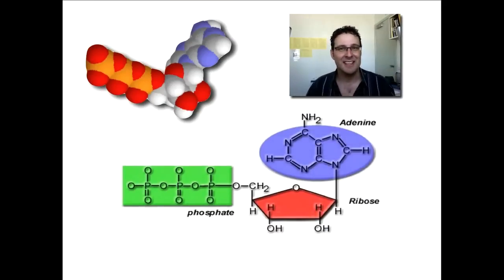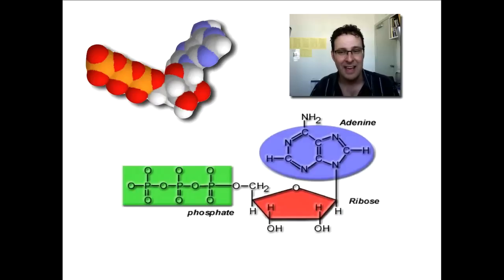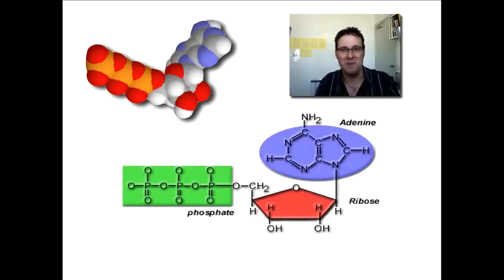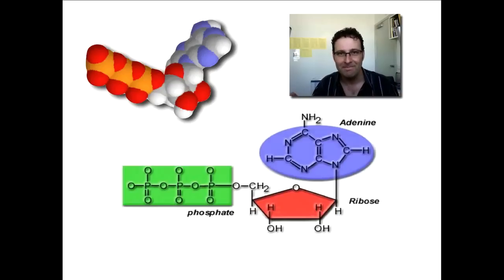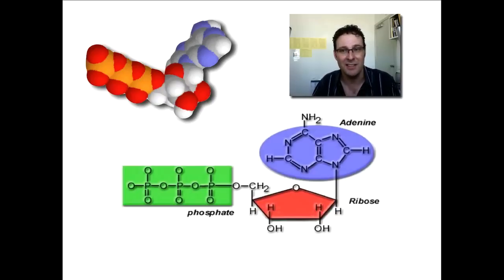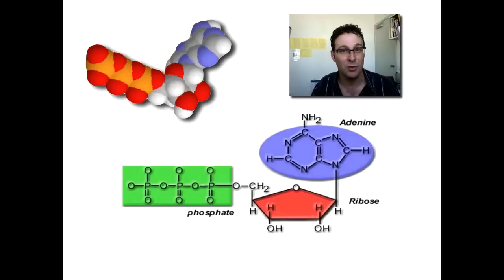This molecule here is ATP — adenosine triphosphate. We call it that because it has adenine in it, a ribose sugar, and three phosphates, which is where the triphosphate comes from. Where have you seen adenine before? In DNA and RNA, in nucleic acids and nucleotides — one of the four bases is A, T, C, G in DNA. The A is adenine, and here it is also the A in ATP.